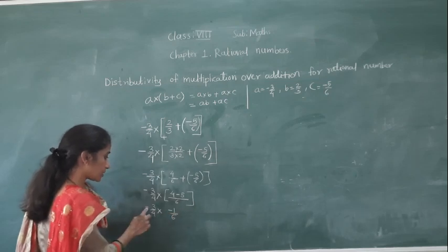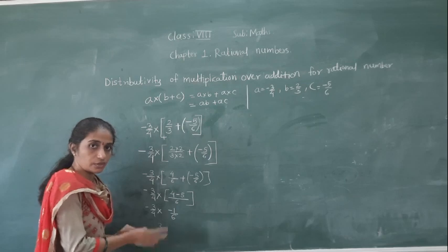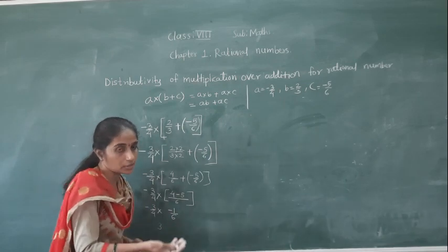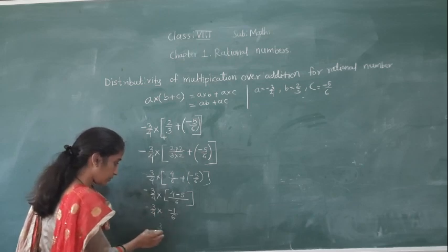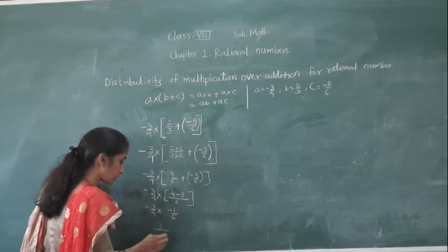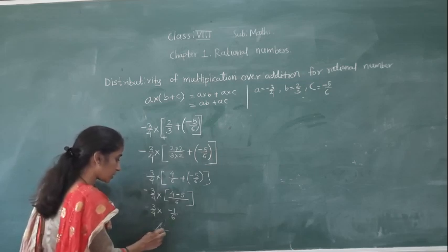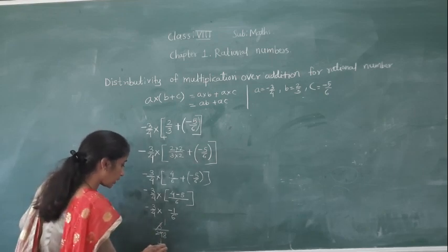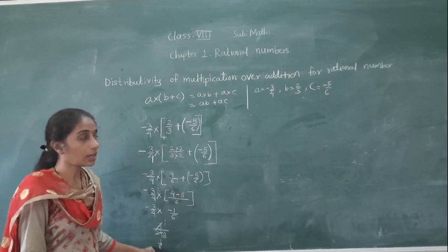Let's multiply this: minus 3 into minus 1 — the product is positive when we multiply two negative integers. 3 ones are 3. 4 sixes are 24. So we get 3 upon 24. Simplifying: 3 ones are 3, 3 eights are 24, so we get 1 upon 8.